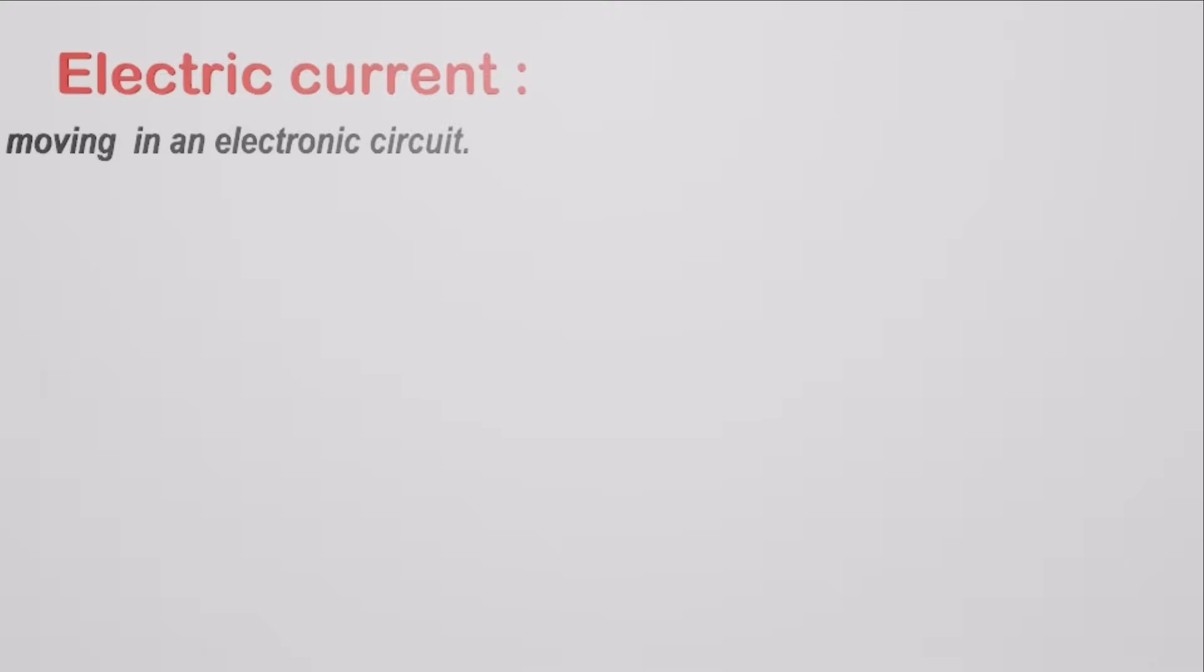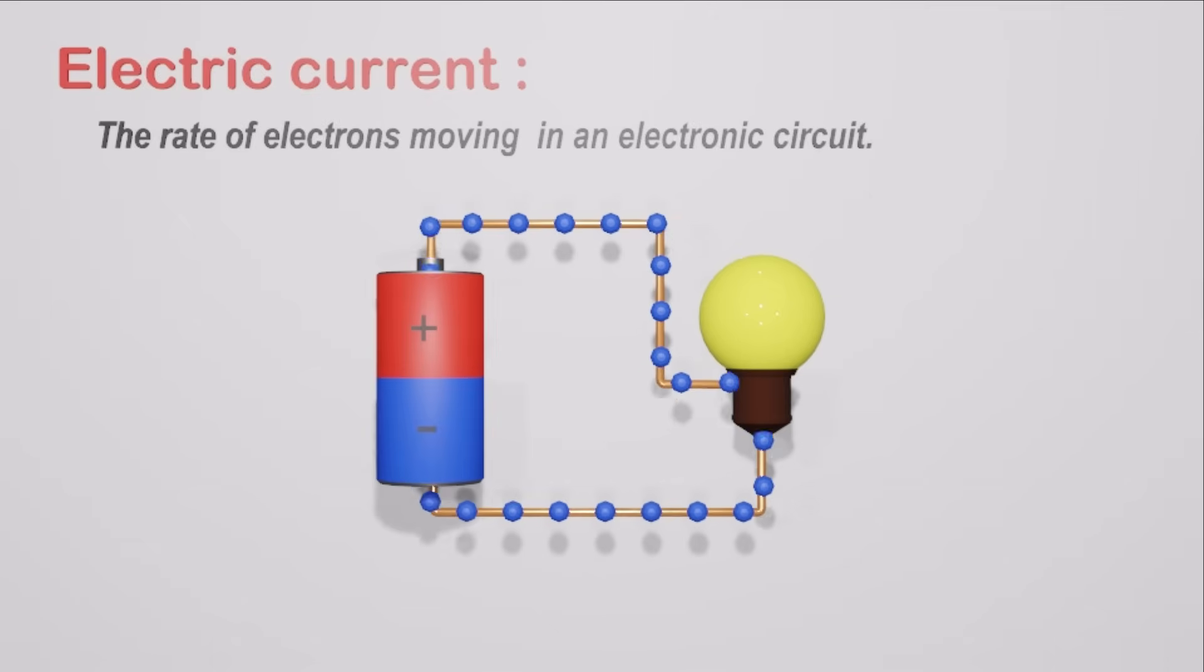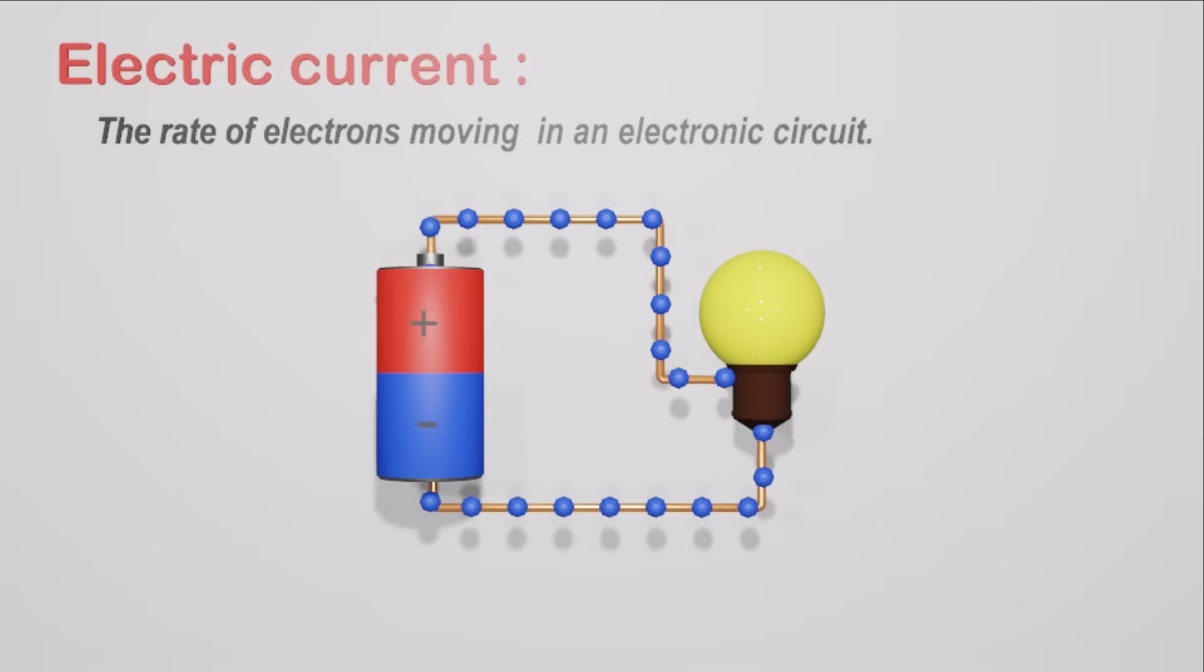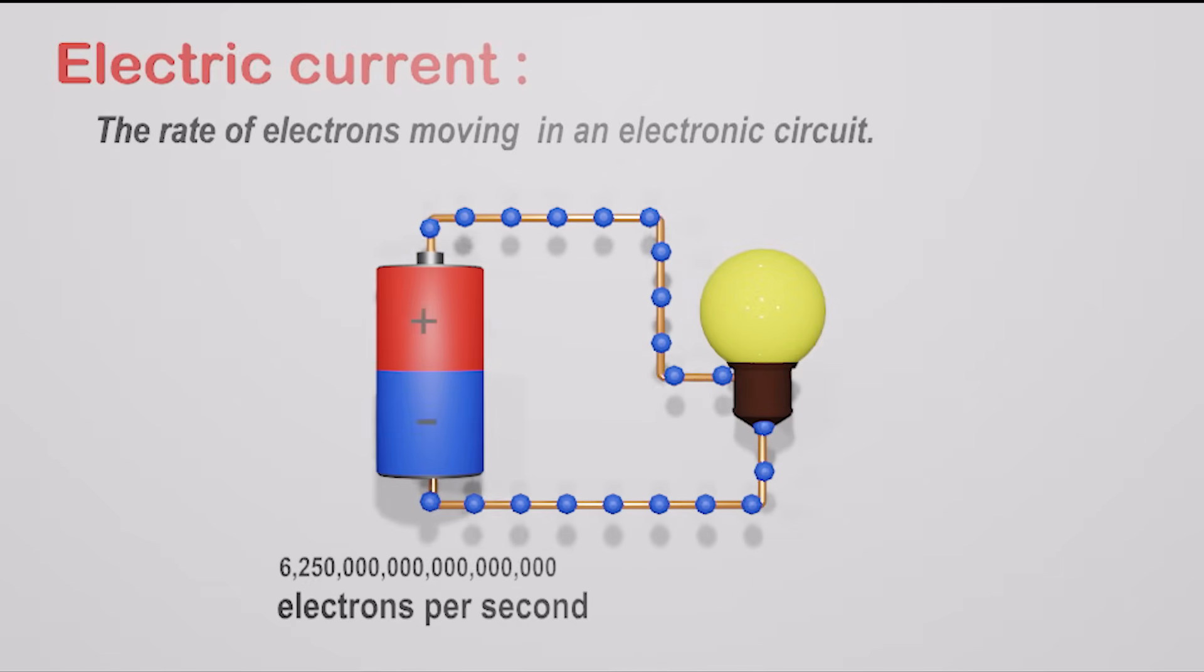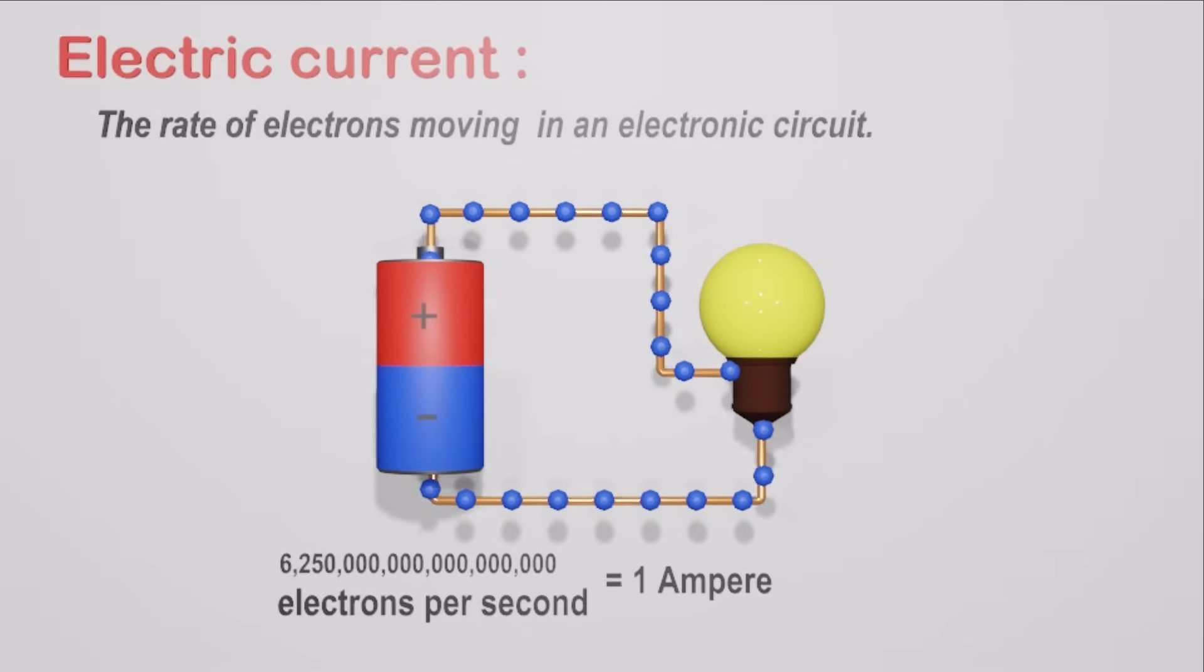Electric current refers to the rate of electrons moving in an electronic circuit. If this many electrons are moving through the circuit at a second, we can say the electric current of this circuit is 1 ampere.